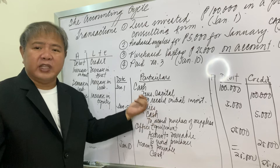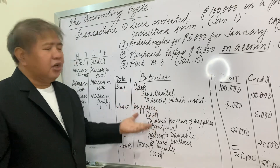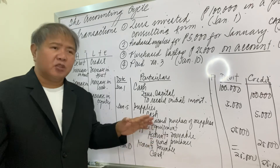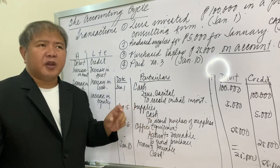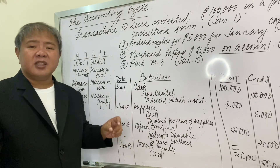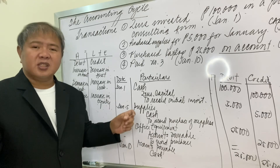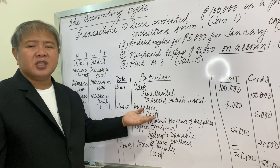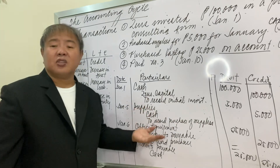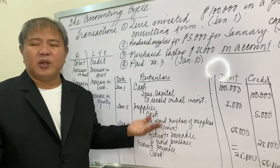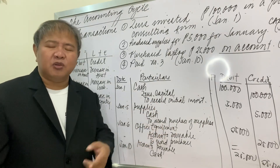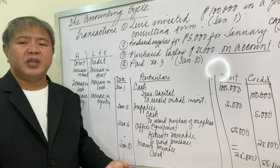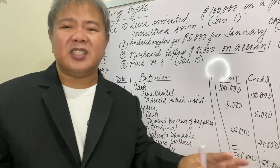That is how we analyze and record transactions. First, we analyze the effect of transactions using the accounting equation, and then we record them in the general journal. Before we proceed further, I will give you a brief quiz to test what you have learned from this discussion so far. Thank you very much and see you again.